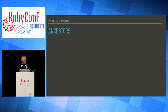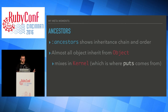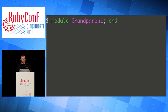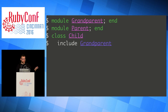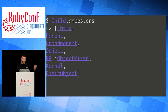The ancestors method shows the inheritance chain and the order that it happens in. Almost all objects inherit from Object. Object also mixes in Kernel, which is where puts comes from, and chomp and eval. In the end, all objects inherit from BasicObject, which we'll talk about a little later. The last module that gets included is the first parent. So we have a grandparent, a parent, and a child — we'll include the grandparent first, then the parent. Looking at the ancestors, even though we include the parent second, it's the first one we see, then grandparent comes next, then Object, Kernel, and BasicObject.